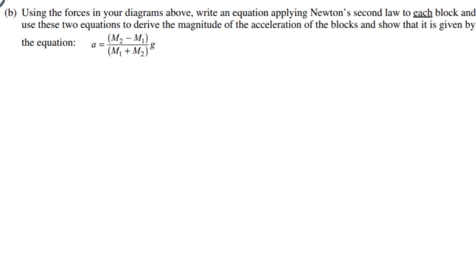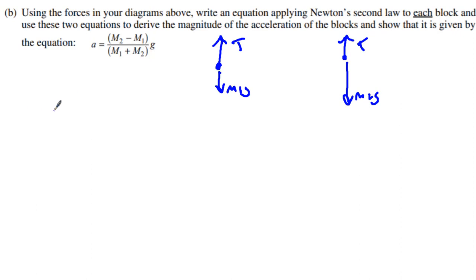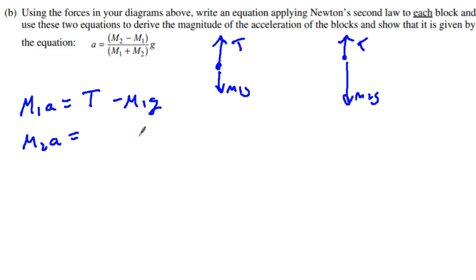Now we apply Newton's second law to each mass. For M1: M1 times A equals the tension minus M1G, because the tension is what accelerates M1 upward. For M2: M2 times A equals M2G minus the tension, because the tension is holding M2 back.